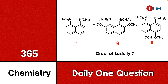Welcome to One Chemistry. This is the 365 Chemistry Series daily question. Here, three different amine compounds are given — all differ in substitution. Basically, they have a naphthalene moiety. The first one, P, is naphthalene with two amine groups. The second, Q, is the same compound with an ortho-methoxy group. R has a para-methoxy group. Among the three, you have to find the order of basicity.